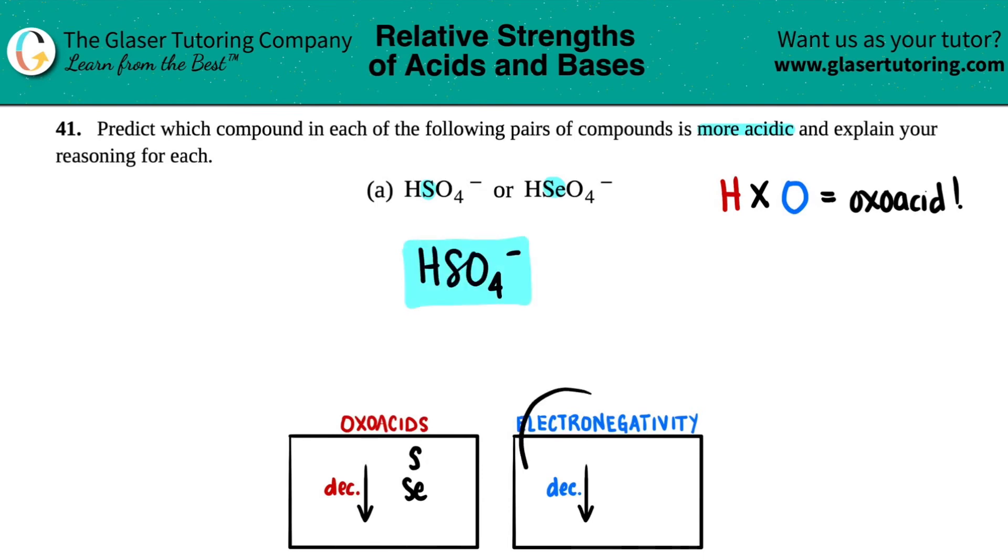This comes from electronegativity. As you go down a group—remember it's S and then right below it's Se—you decrease in electronegativity. The better acid is always the one attached to the higher electronegative element. So in this case, it's HSO4 minus because sulfur is more electronegative than Se.